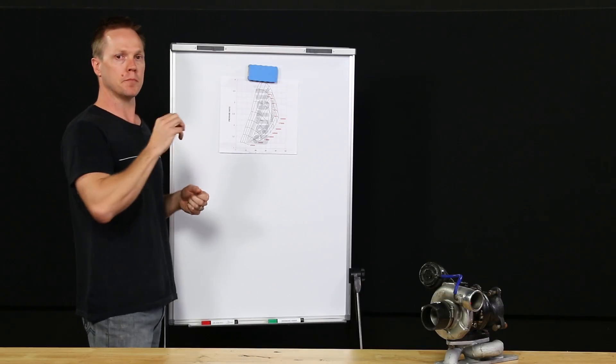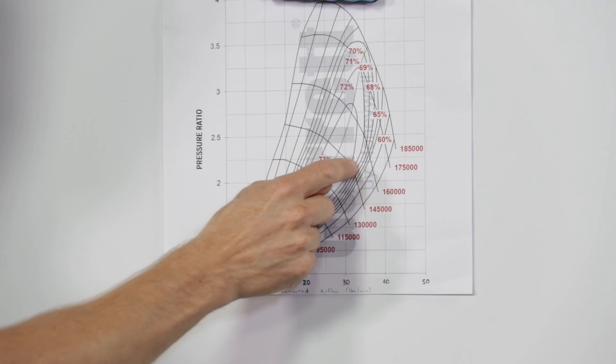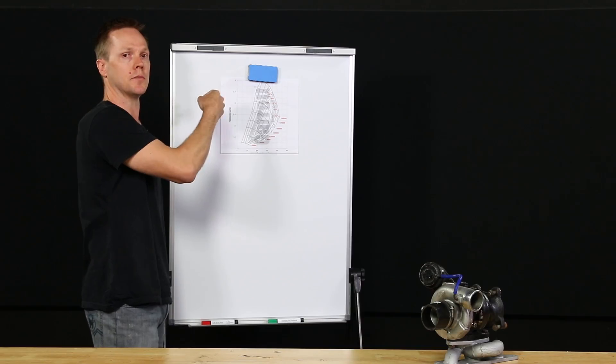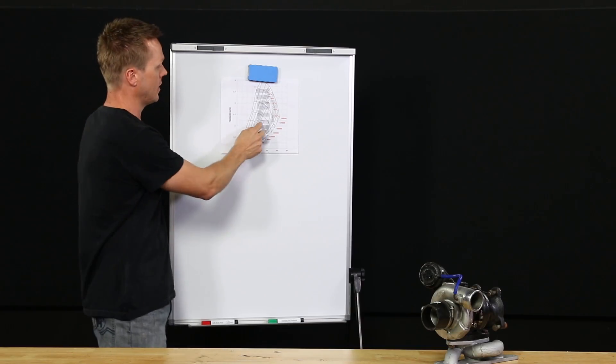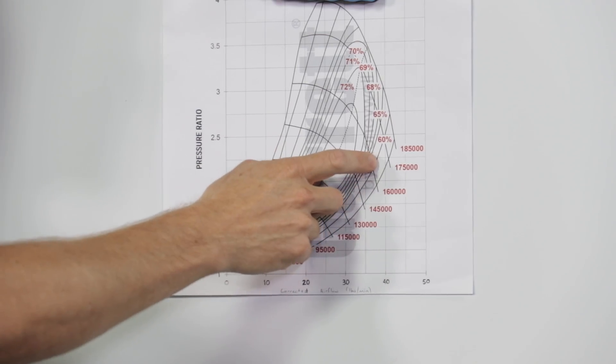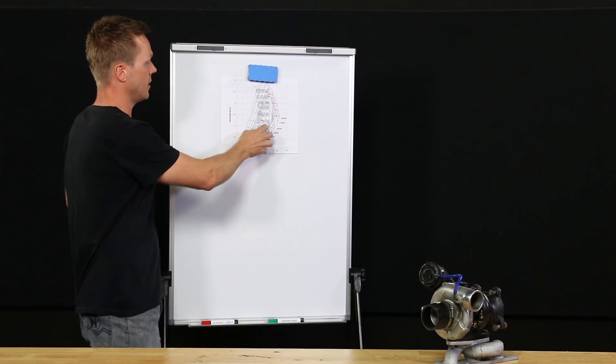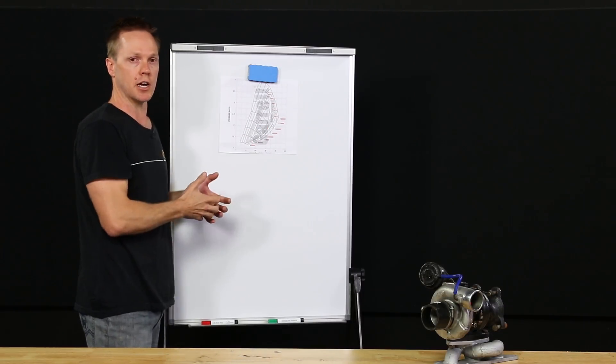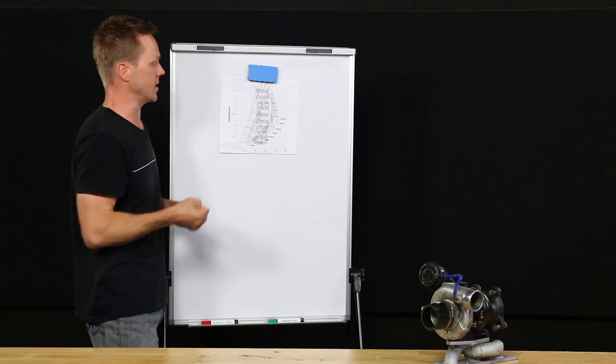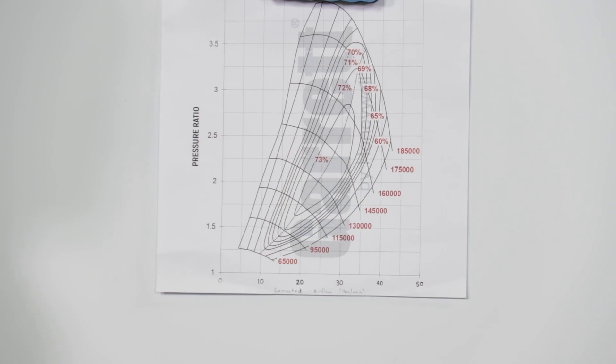Problem is, if you put a boost controller on there and you try and hold high boost at high RPM, you start moving over here. And you'll notice we're crossing a lot of RPM lines here too. So the turbine speed is getting up there. And we're also falling off the efficiency island, so the efficiency is dropping dramatically. You could also assume that the exhaust back pressure is increasing. The charge temperature is going up. So you're trying to force a tiny little turbo to do more than what it can actually deliver. So once you start pushing it out here, that turbo is not going to be making power.